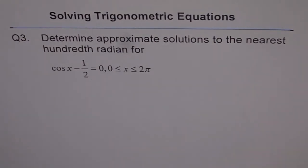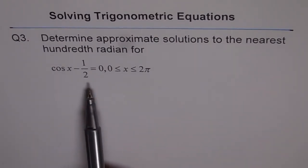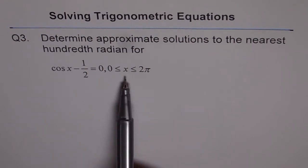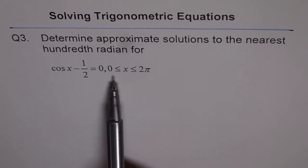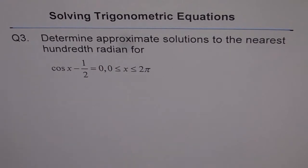Solving trigonometric equations, question 3. Determine approximate solutions to the nearest hundredth radian for cos x minus half equals to 0, where x is greater than or equal to 0 and less than or equal to 2 pi.